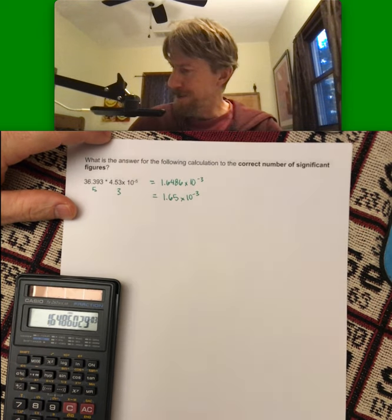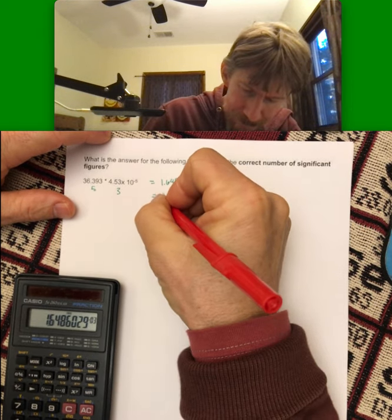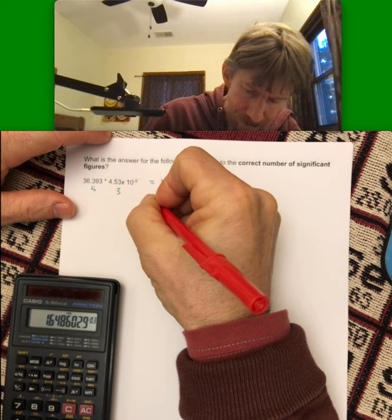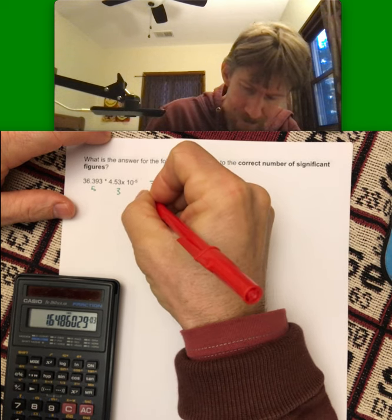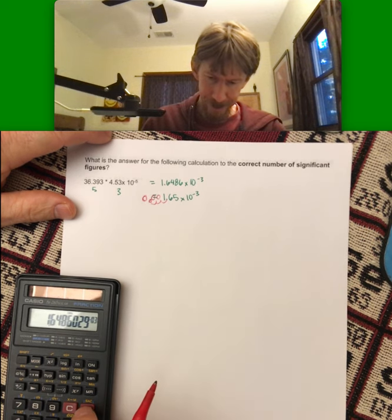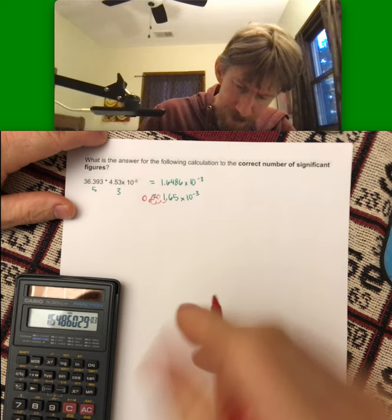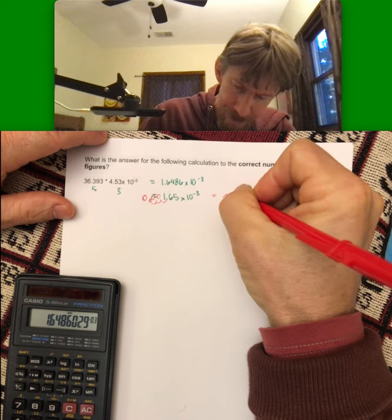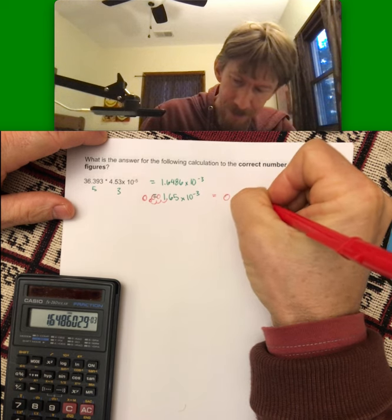You would move the decimal place over three places. And your answer would be 0.00165.